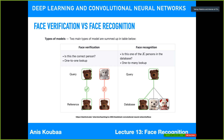In face verification, you have a reference — for example, you want to check whether a new image is the same person. You compare a new image against one image in the database. For instance, on mobile phones, face verification is performed: when you open your phone, you have already registered yourself as a reference, and it verifies whether it is you or not. It does not check against multiple users.